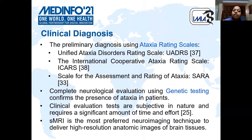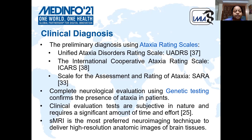Clinical diagnosis of this disease can be carried out using the Ataxia Rating Scales and Genetic Test. Ataxia Rating Scales is basically a questionnaire where the doctor asks the patient about different problems which they face, and a rating is assigned. Genetic testing is a blood test which confirms the presence of Ataxia in the patient. These clinical tests are subjective in nature and require a significant amount of time.